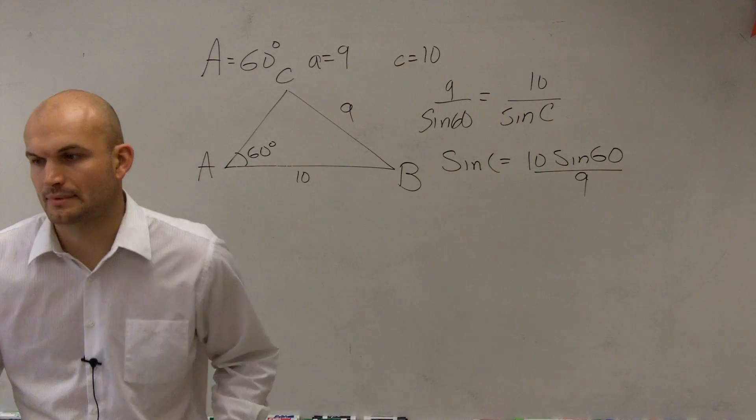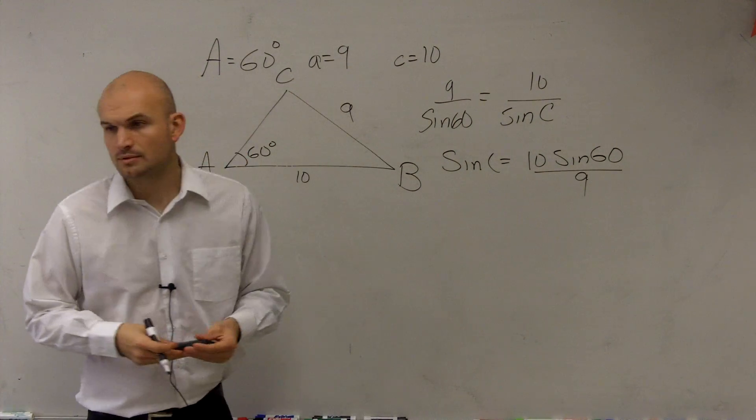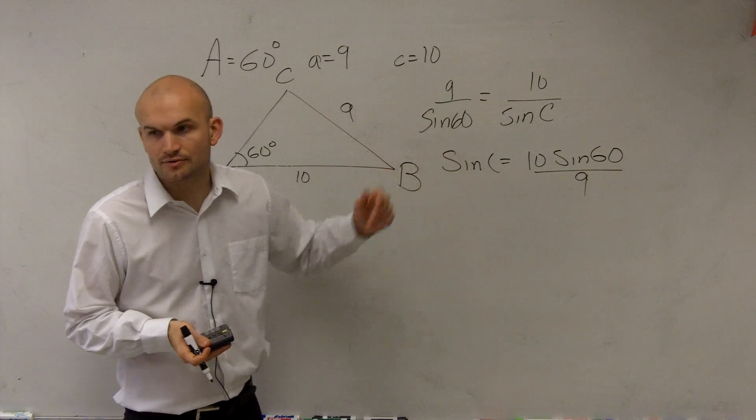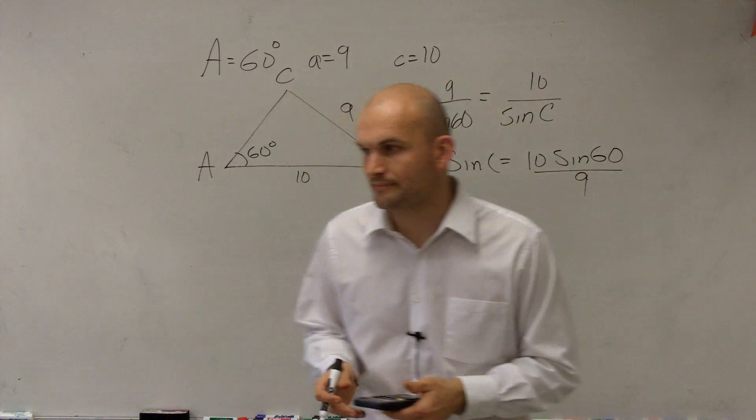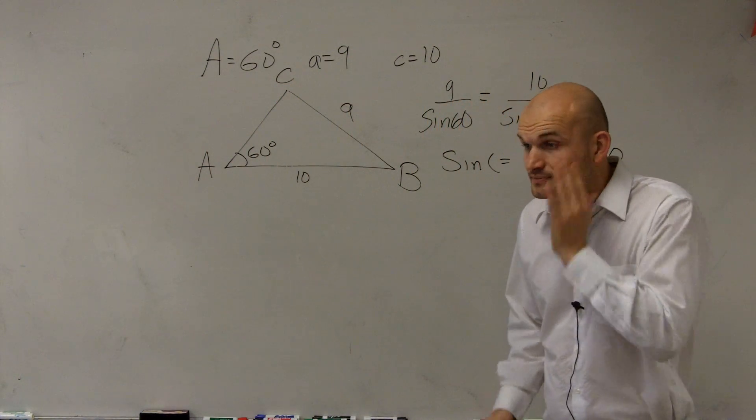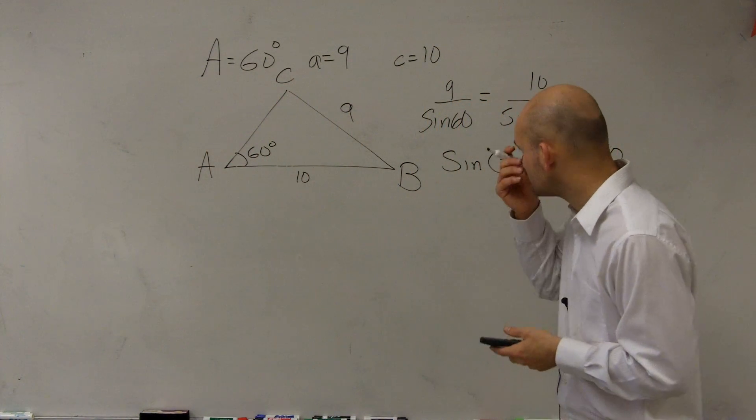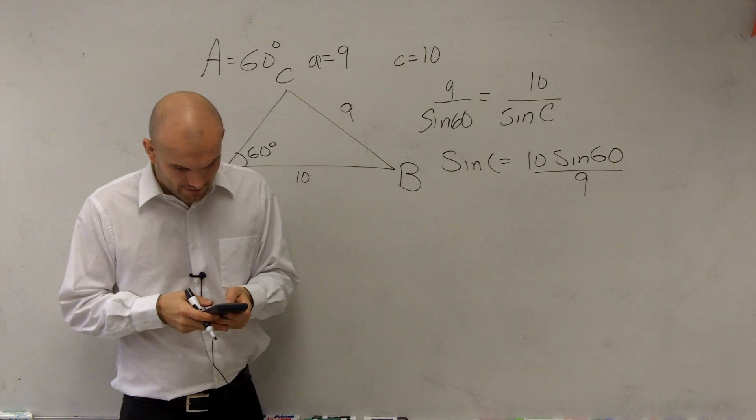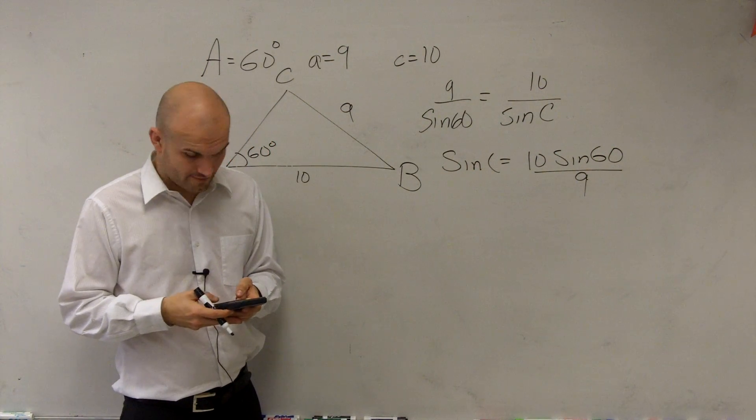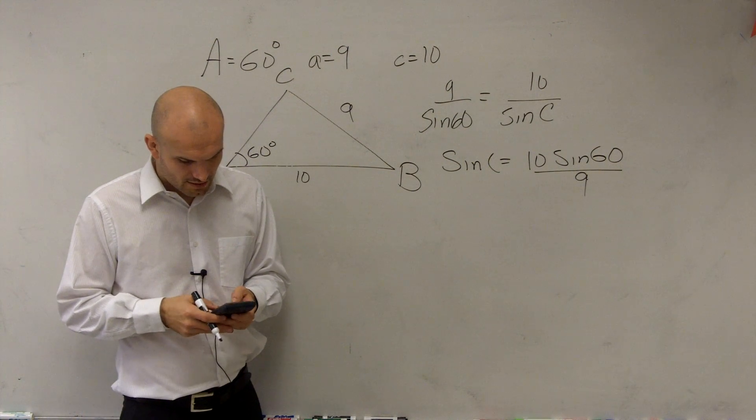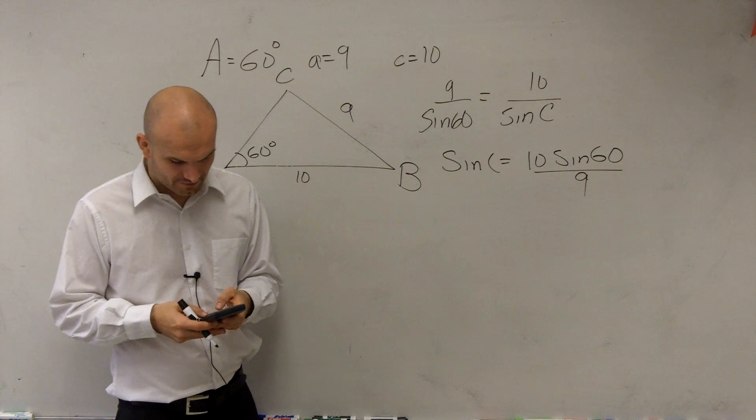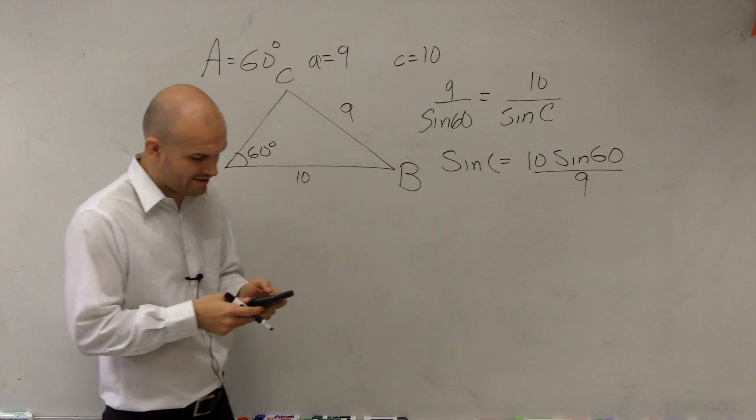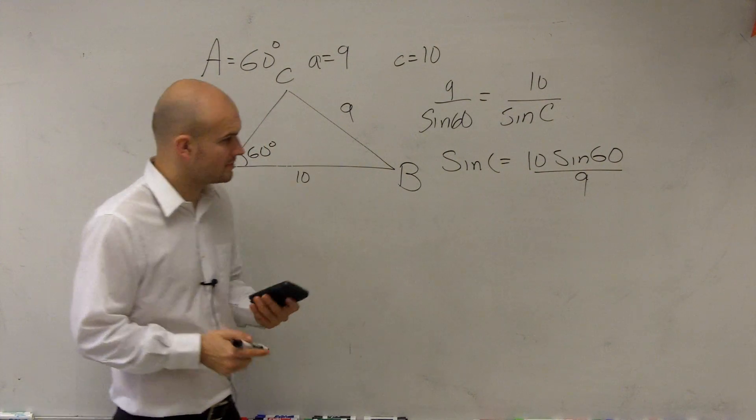So we can say the sine of c equals 10 times the sine of 60 divided by 9.